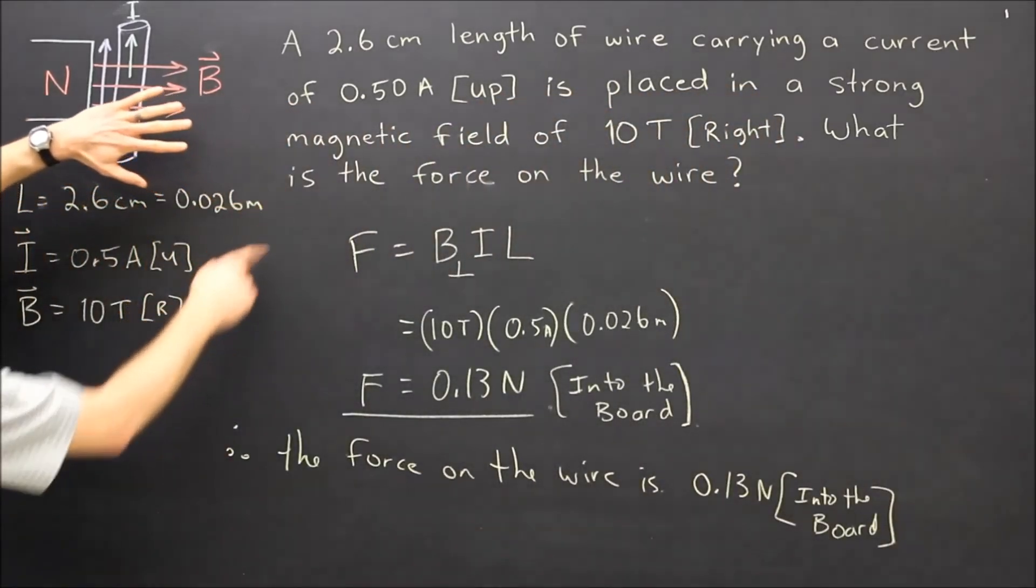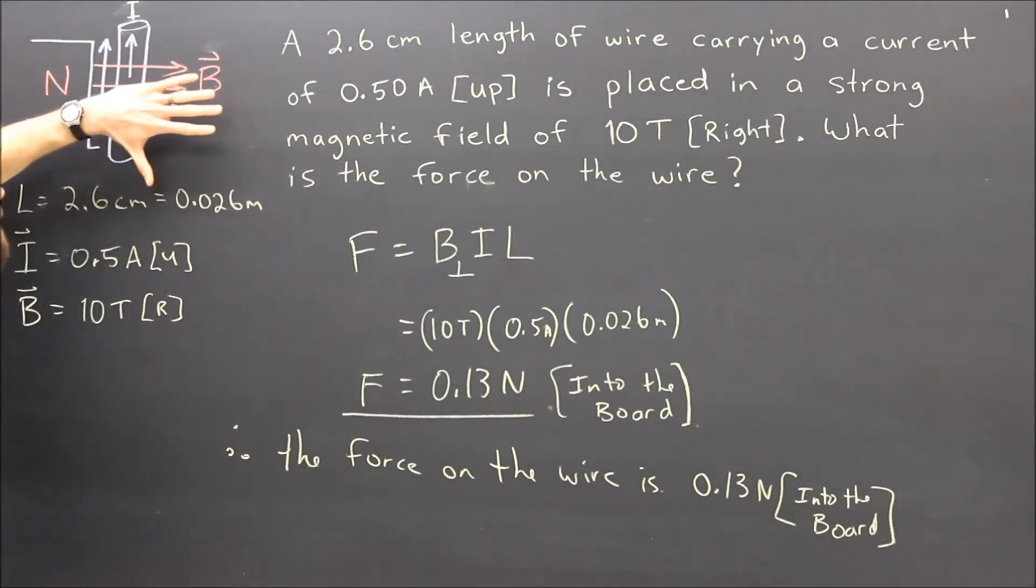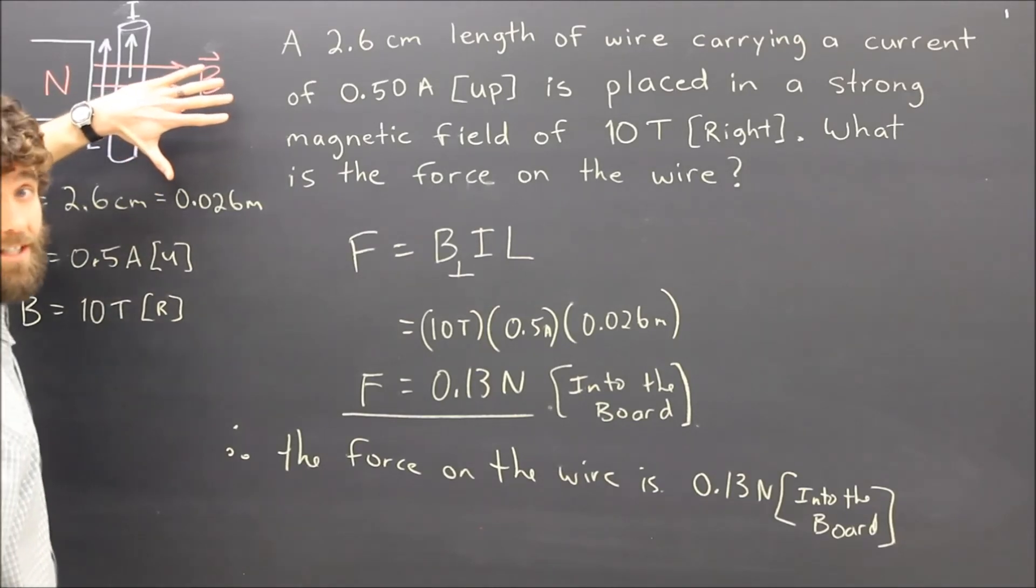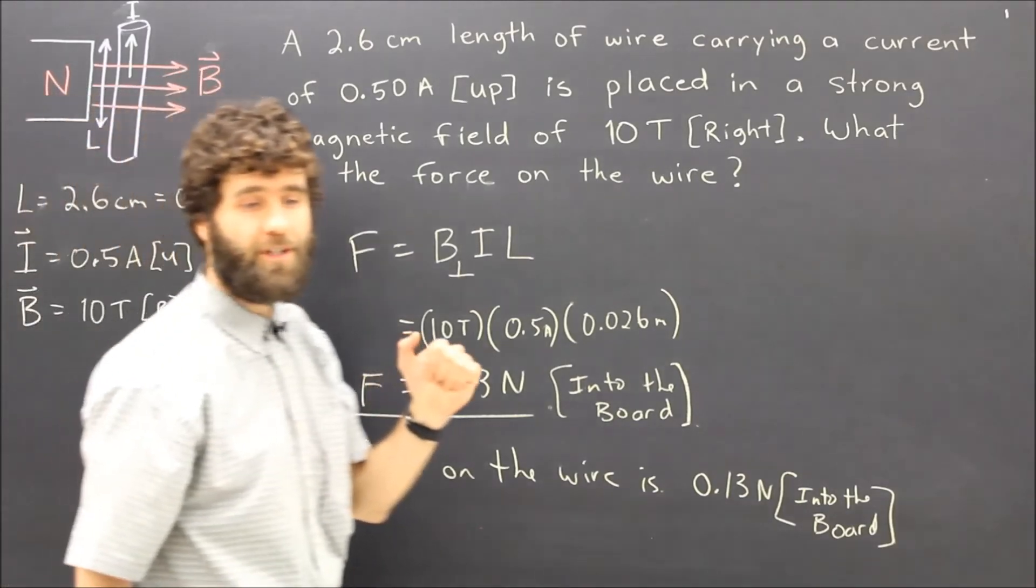The magnetic field line is still to the right. The electron flow would be down. And the palm would still be facing into the board, indicating the direction of the force is into the board. So both give you the same answer.